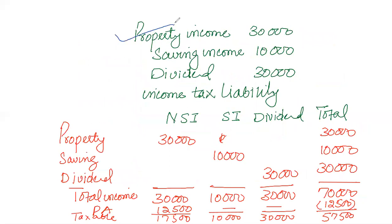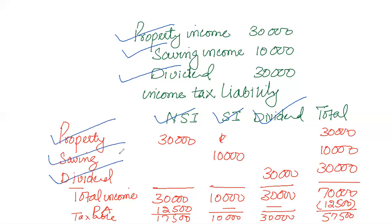Moving to another question involving all three sources of income: property income £30,000, saving income, and dividend income. We create a proforma with columns for non-saving income, saving income, and dividend income. Total income is less than £100,000 so the full personal allowance of £12,500 is available. Deducting it from non-saving income, we get taxable non-saving income, taxable saving income, and taxable dividend income. Total taxable income is £57,500, which is beyond the basic rate band.